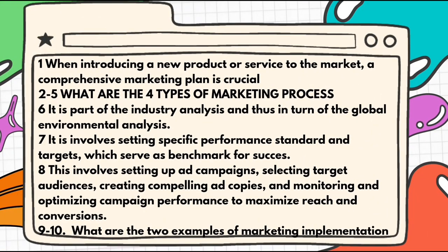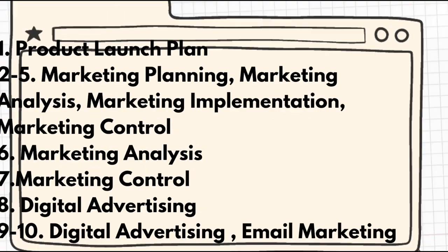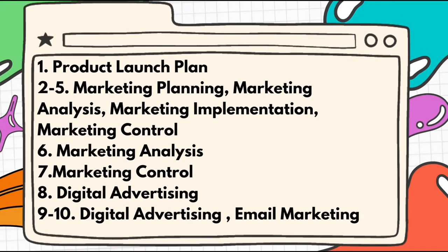Post-test questions and answers. When introducing a new product or service to the market, a comprehensive marketing plan is crucial. Enumeration: what are the four types of marketing plan? Marketing analysis is part of the industry analysis and global environmental analysis. Marketing control involves setting specific performance standards and targets which serve as benchmarks for success. Digital advertising involves setting up ad campaigns, selecting target audiences, creating compelling ad copies, and monitoring campaign performance to maximize reach and conversions. What are the two examples of marketing implementation? Answers: number one, product launch plan; number two to five, marketing planning, marketing analysis, marketing implementation, marketing control; number six, marketing analysis; number seven, marketing control; number eight, digital advertising; number nine to ten, digital advertising and email marketing.